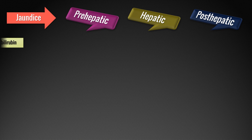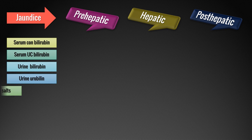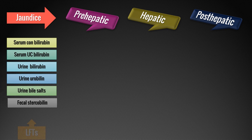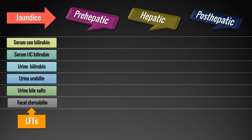So far, these are the parameters we measure in liver function tests based on excretory functions of the liver: from blood — total bilirubin, conjugated and unconjugated bilirubin; from urine — urobilin and bile salts; and from stool — stercobilin.